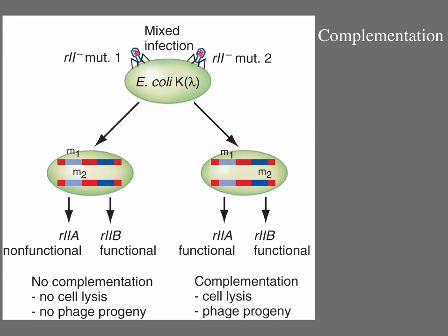Remember that when E. coli K are infected with any single R2 mutant strain, the mutant phage cannot grow in this host and so the cells don't lyse. Benzer co-infected E. coli K with pairs of different R2 mutants. If all the R2 mutants had mutations in the same gene, E. coli K co-infected with any pair of R2 mutants would behave the same way as when infected with a single R2 mutant strain. The cells would not lyse.